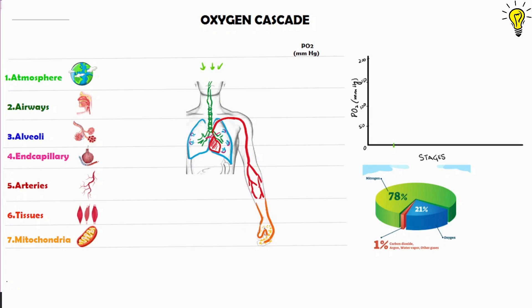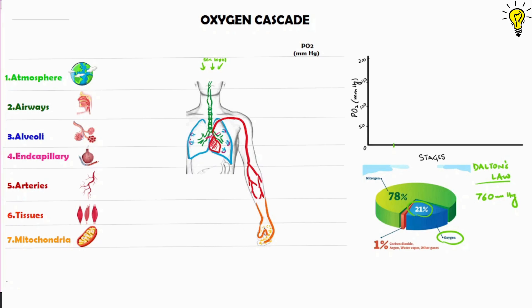The air we breathe is a mixture of gases containing 21% Oxygen. As per Dalton's law, the total pressure of a mixture of gases equals the sum of individual partial pressures. So at sea level, where the total pressure of air is 760 mmHg, 21% of 760 mmHg will be contributed by Oxygen. The partial pressure of Oxygen in air is barometric pressure multiplied by 0.21 — so 760 × 0.21 equals 159 mmHg in dry sea level air.